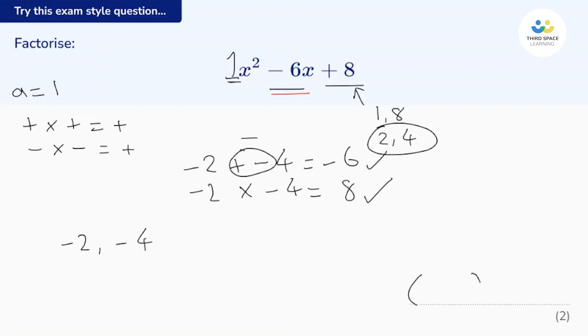All we have to do then is open up a pair of brackets, pop in the x, because the variable is x, and then use our numbers. So negative 2 and negative 4. And there we go, fully factorised. We could write them the other way around if we wanted. x take away 4, x take away 2. That's the same thing. That is a perfect answer.